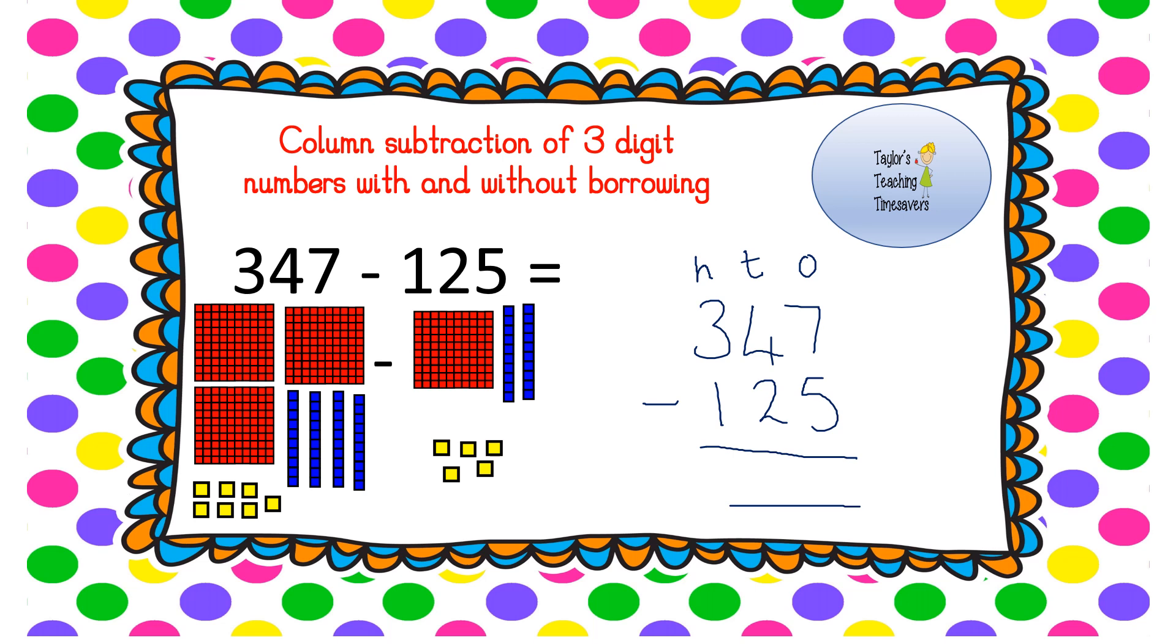So we're going to start with our ones, always start with those ones. So 7 take away 5. If we look at our base 10 pictures, we started with 7. 1, 2, 3, 4, 5 I've taken away, leaves me with 2.